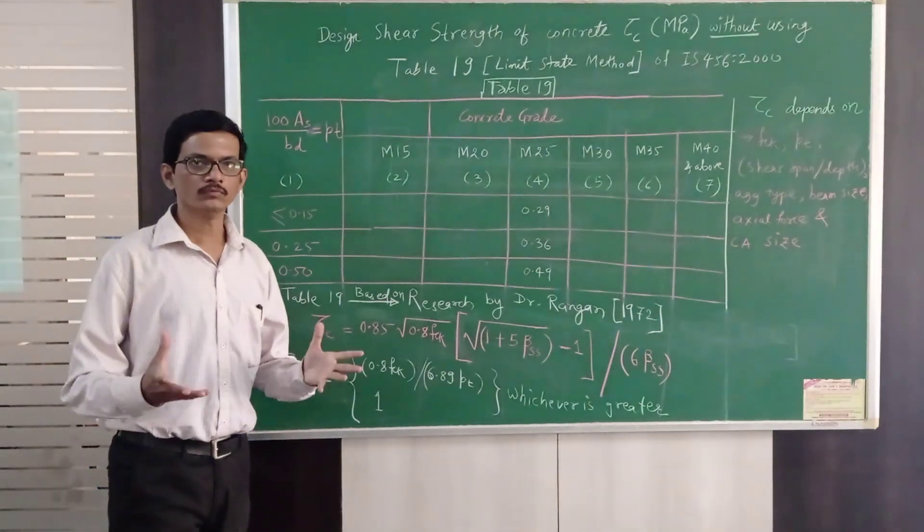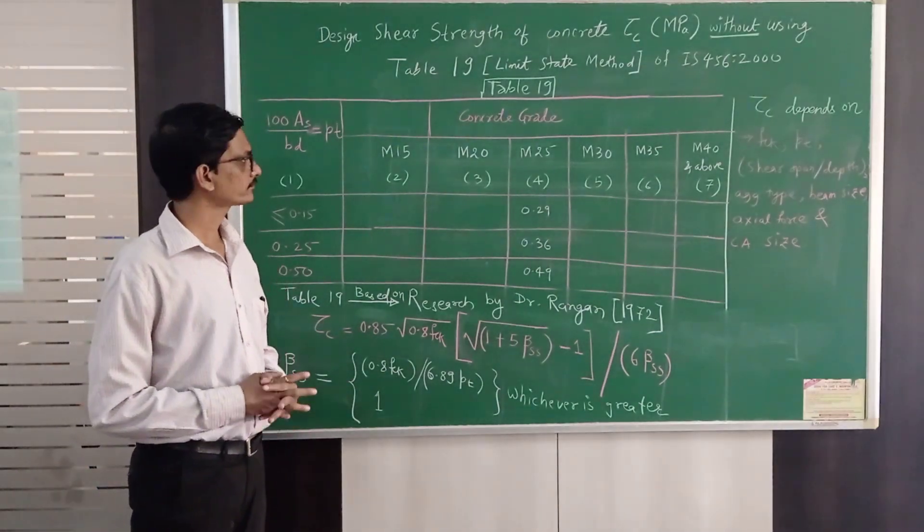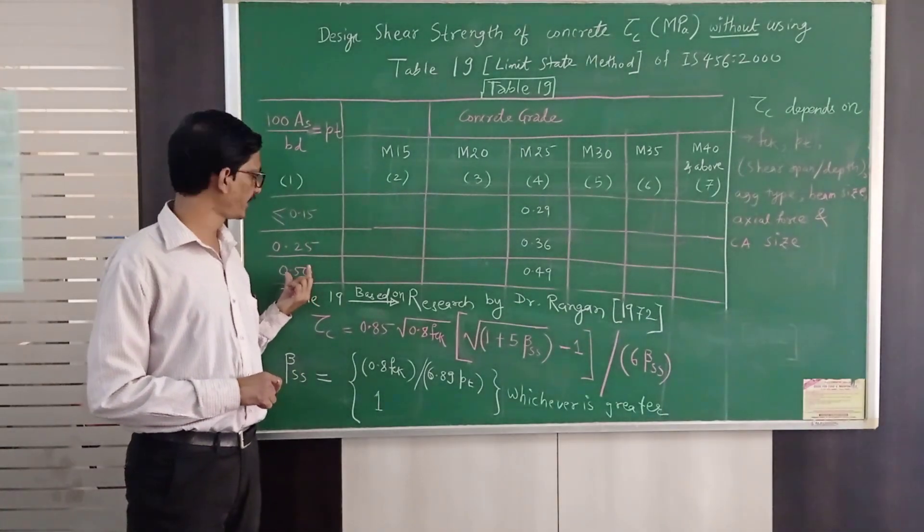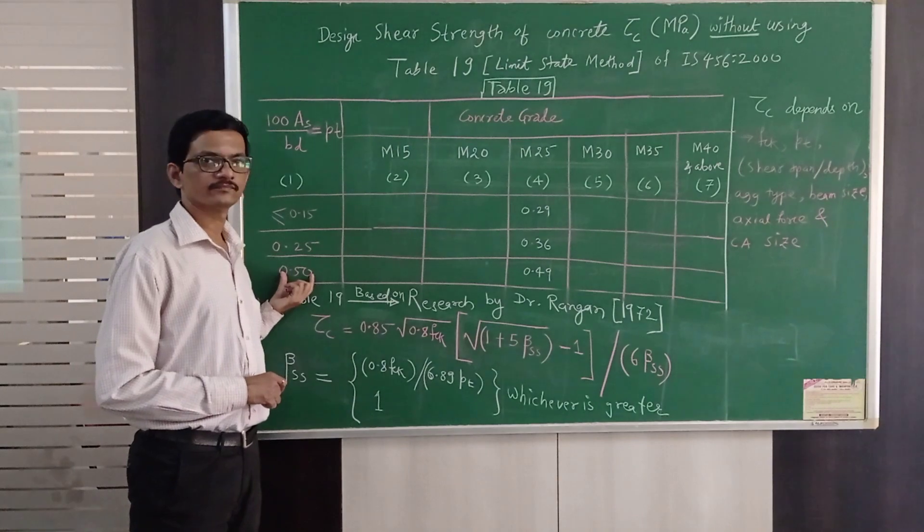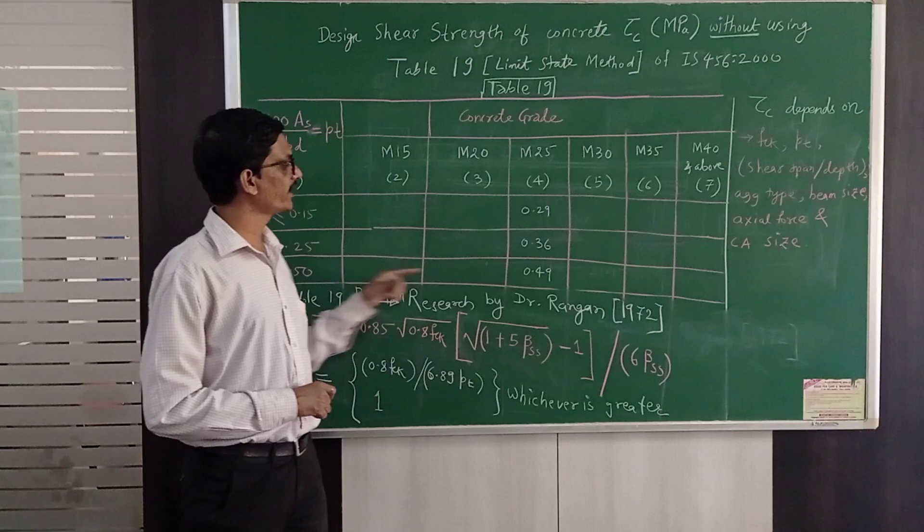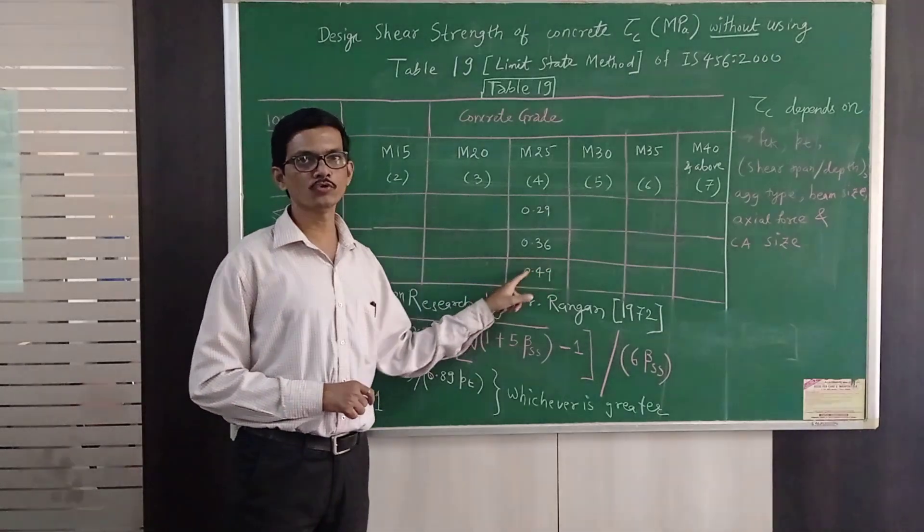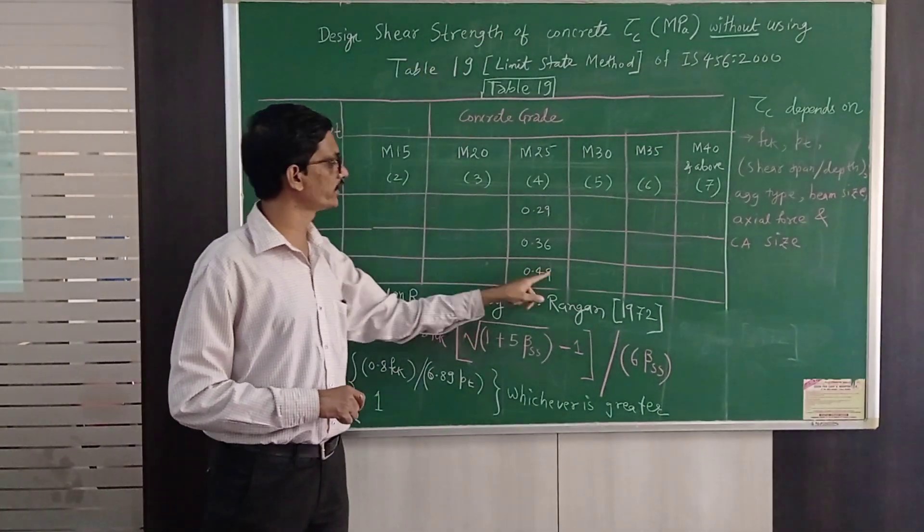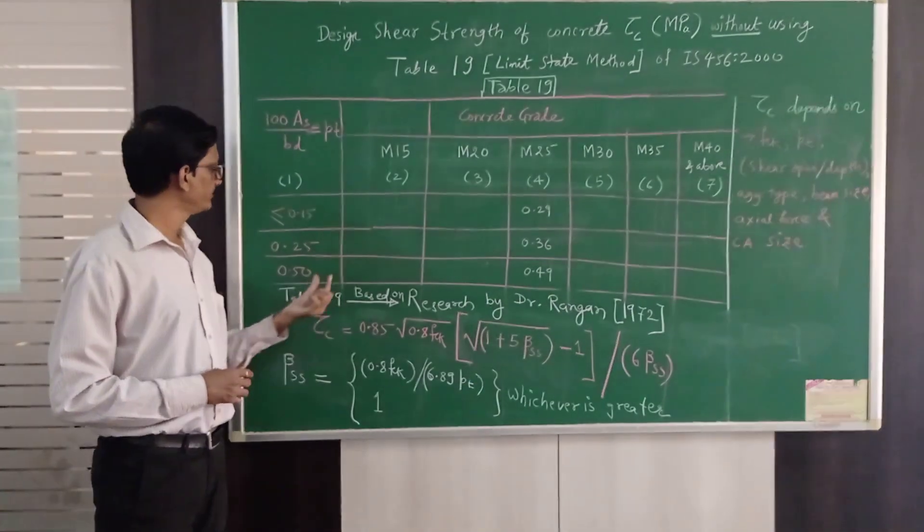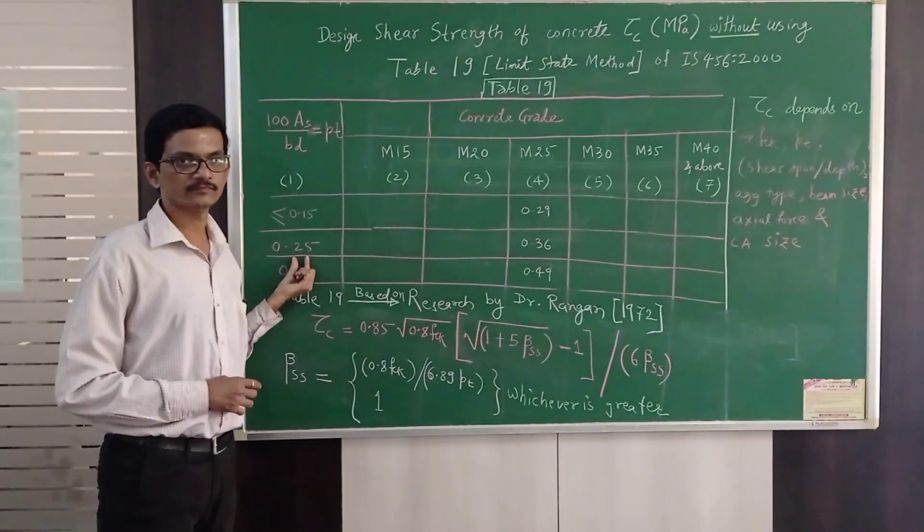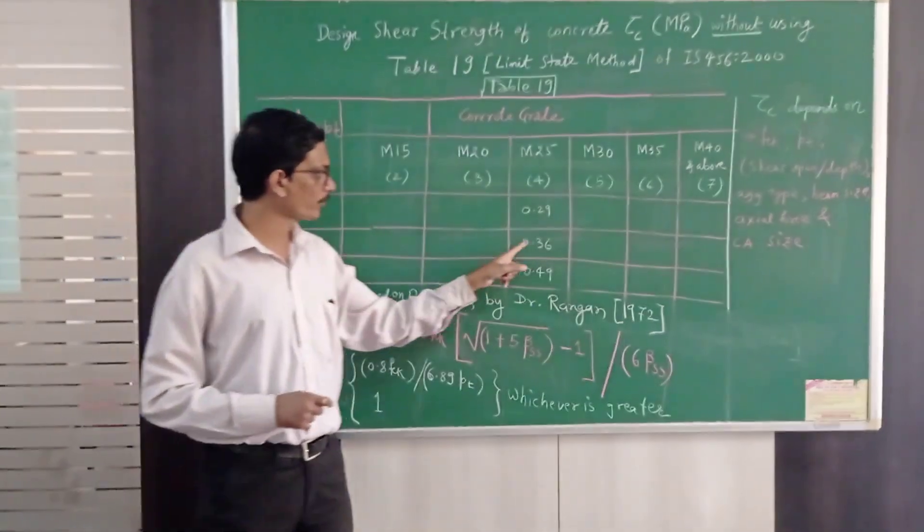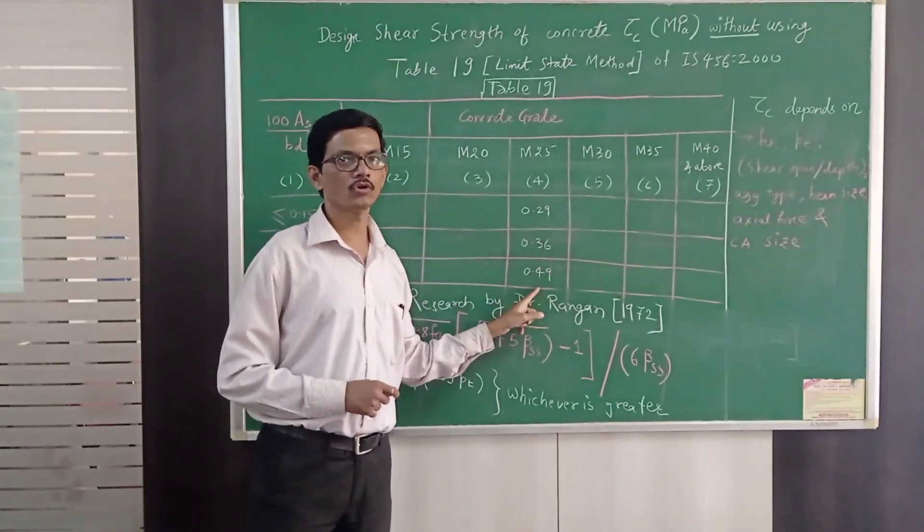What we do is when we get Pt percentage, for example our Pt percentage is 0.5 and suppose my concrete grade is M25, then tau c is directly 0.49. But suppose the value of Pt is 0.32, that means it is between 0.25 and 0.5, then we have to interpolate between these two values.